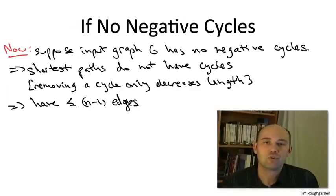So what does this observation have to do with our recurrence? Well, it tells us we only need to compute the recurrence, evaluate subproblems, for values of I up to N minus one.